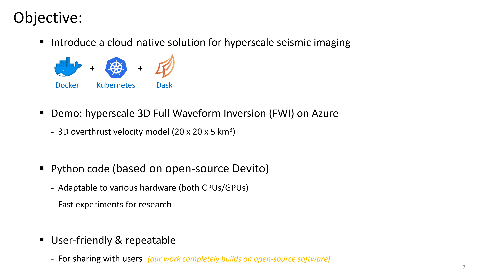As cloud computing becomes more and more popular, we explore its potential for hyperscale seismic imaging workloads. The lift-and-shift approach of a traditional MPI-based solution faces various challenges. We instead introduce a cloud-native solution based on Docker, Kubernetes, and Dask that offer easy deployment and great scalability. We will also demonstrate a large-scale 3D FWI on Azure based on this cloud-native solution, where we use the full 3D overthrust velocity model whose size is 20 by 20 by 5 cubic kilometers.